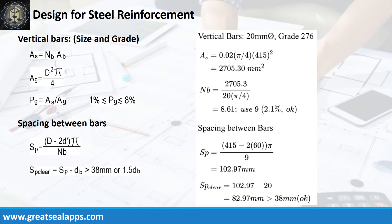Given a steel ratio of 2% and an assumed column diameter of 415 mm, the area of steel is 2,705.3 square millimeters and the number of vertical bars for a 20 mm bar is 9. The spacing between bars is 102.97 mm, and the clear spacing between bars is 82.97 mm.